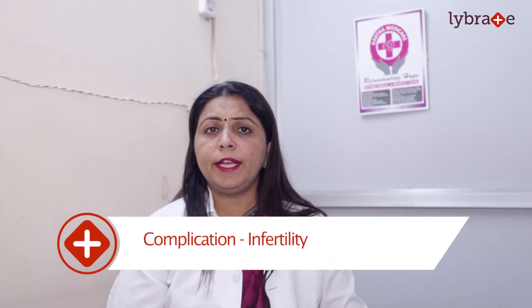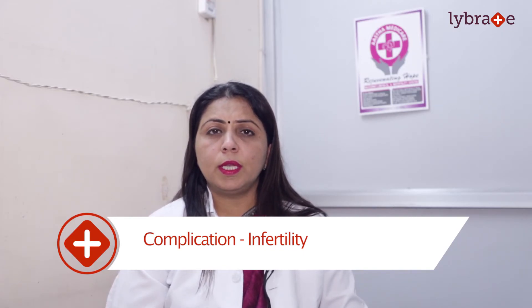What happens if the patient ignores the symptoms? If we don't treat the patient in time, in the long run, as ovulation is not effective, the patient may have difficulty in conception and it leads to infertility. Because of the hormonal imbalance caused by polycystic ovaries, there is a rise in male-type hormones and a decrease in female-type hormones. As a result, there are metabolic changes which lead to changes in the lipid profile, and the patient becomes at risk of diabetes as well as cardiac problems.